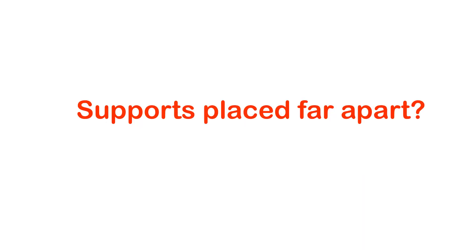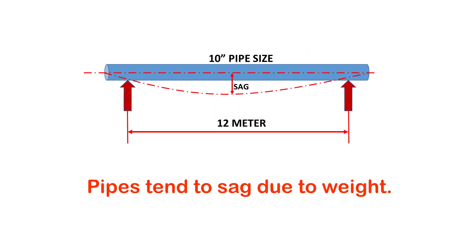Now let's see what happens if the supports are placed far apart. If pipe supports are placed far apart, the portion of piping between the supports tends to sag due to weight. In addition to that, along with the flow, the sagging portion of the piping tends to oscillate more and it will cause further damage to the pipes.